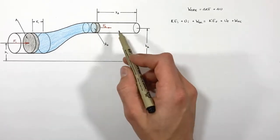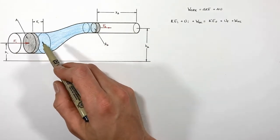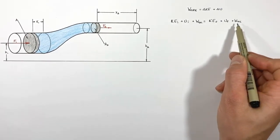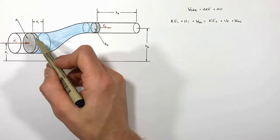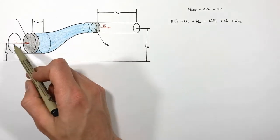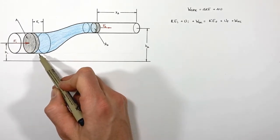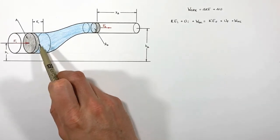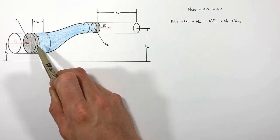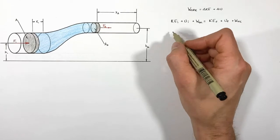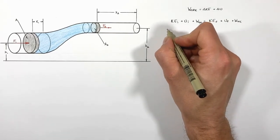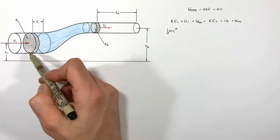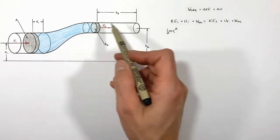To turn this into Bernoulli's law, let's look at each term individually. Starting with the initial kinetic energy: if we push on the input piston and cause it to move forward at some velocity v₁, a particle in that fluid is also moving forward at that same velocity. So that particle of mass m will have kinetic energy of one-half mv₁², where v₁ is the velocity at point one — the initial side of the system.